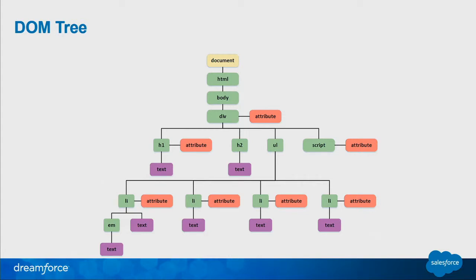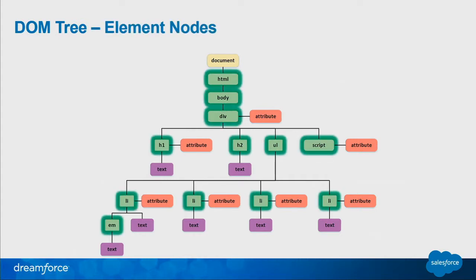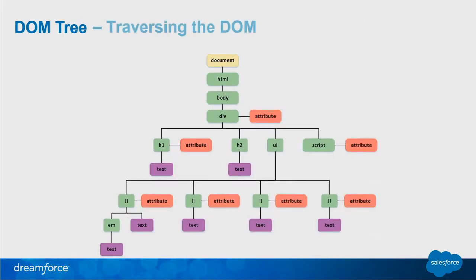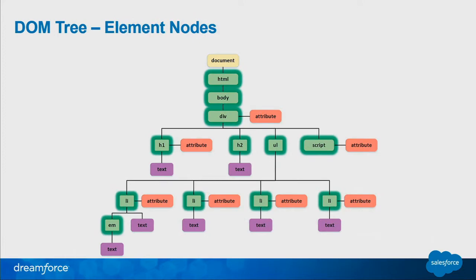The next topic we're going to talk about is the DOM tree. Here we have a DOM tree — it's a bunch of tags. We have element tags, attribute tags, and text tags. Actually, they're nodes: text nodes, attribute nodes, and element nodes.